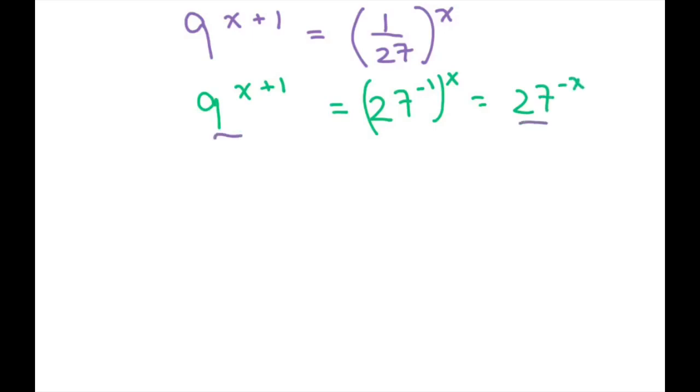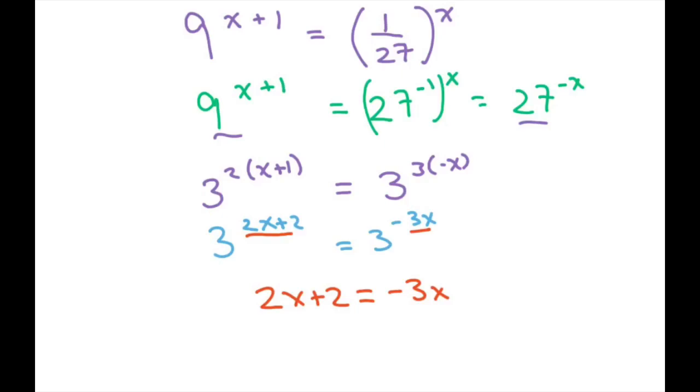Now my bases for these are 3, so let's write the same base. 9 is really 3 squared and you multiply that by x plus 1 equals, and 27 is 3 cubed times your negative x. So we have 3 to the 2x plus 2 equals 3 to the negative 3x. Since my 3s match I only have to deal with my exponents because we're solving for x. You get 2x plus 2 equals negative 3x. I'm going to add 3x to both sides, and you get 5x. Subtract the 2 you get negative 2. So x equals negative 2 over 5, and that's your final answer.